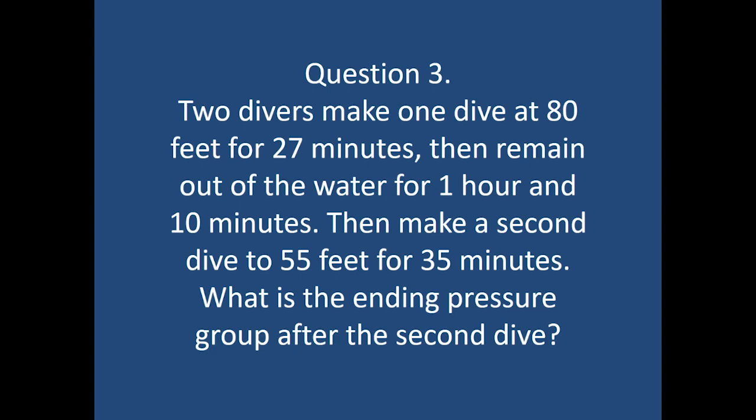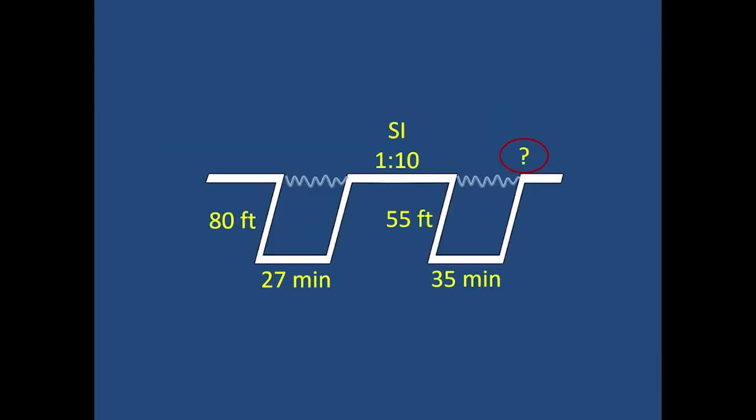Question number three says two divers make one dive at 80 feet for 27 minutes then remain out of the water for one hour and 10 minutes then make a second dive to 55 feet for 35 minutes. What is the ending pressure group after the second dive?